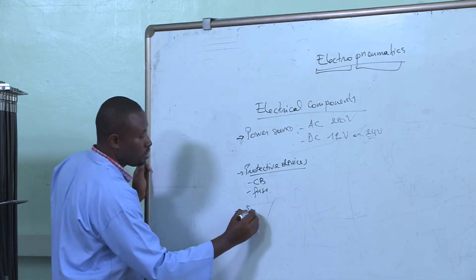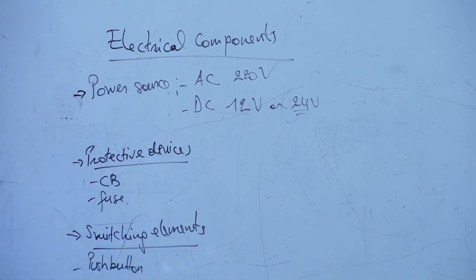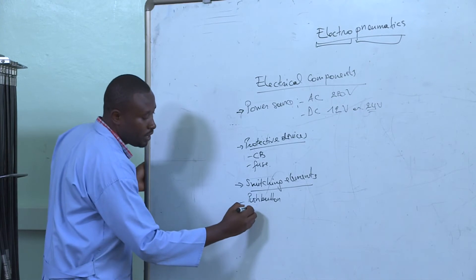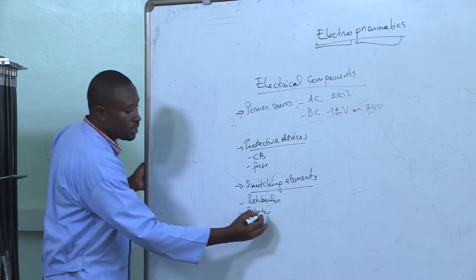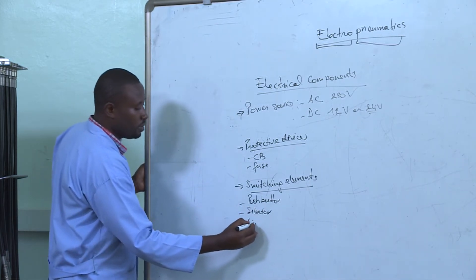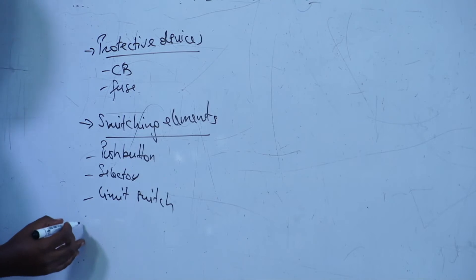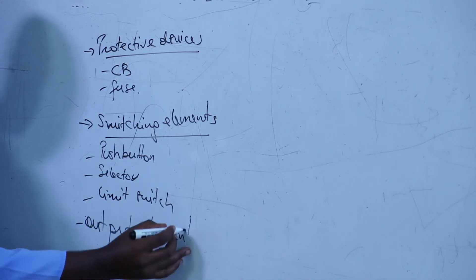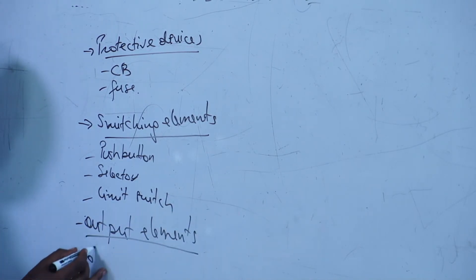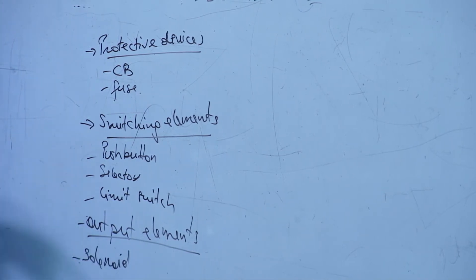We will also need switching elements such as a push button switch, a selector switch, and limit switches, and so on. We also need to have output elements — for example, the solenoid. This solenoid is connected to the pneumatic valve and is the one that controls the pneumatic valve.